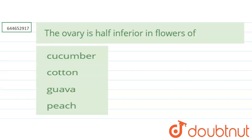The question given here is: the ovary is half inferior in which flower? The options are cucumber, coconut, guava, and peach. First of all, let's understand what 'ovary is half inferior' is called.